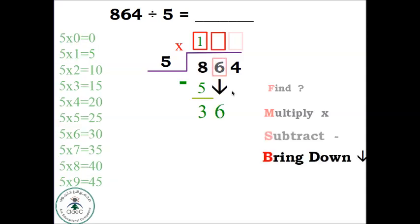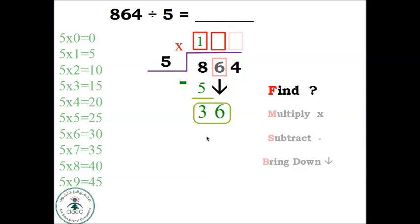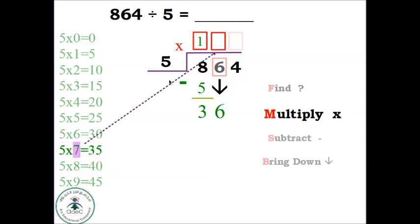We repeat the steps to fill the second digit. Find: 5 times what is 36 or less? We don't have 36, so we take 35. Multiply: 5 times 7 equals 35. 7 goes up, 35 goes down. Subtract: 36 minus 35 equals 1. Bring Down: Bring down the 4 to get 14.